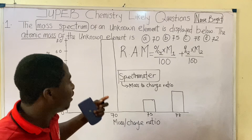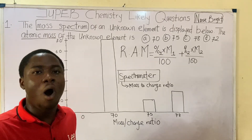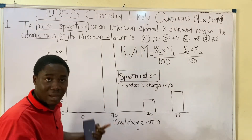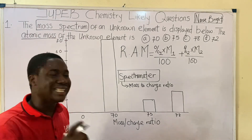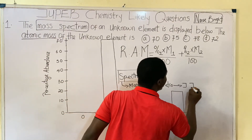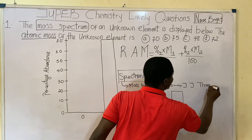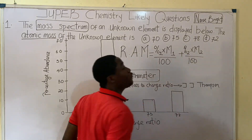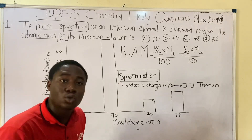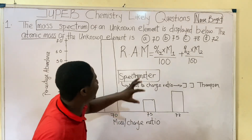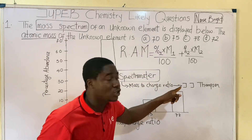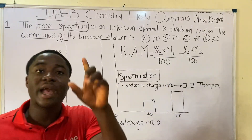The spectrometer helps to determine the mass-to-charge ratio of a particular element. This concept was brought about by a scientist called J.J. Thompson. So if you are asked who brought about the concept of mass spectrum using the spectrometer, the answer is J.J. Thompson.